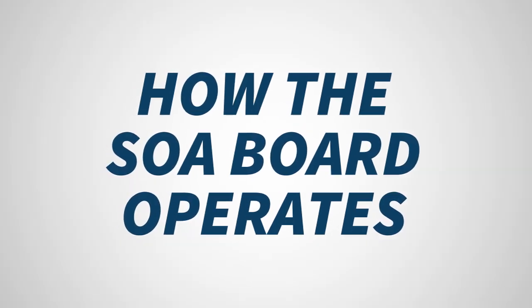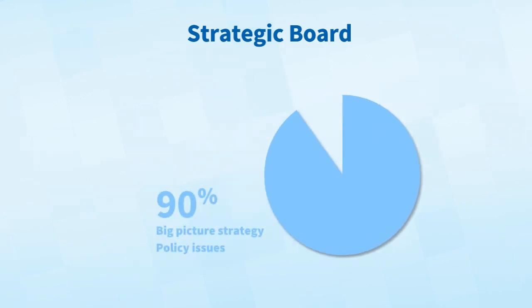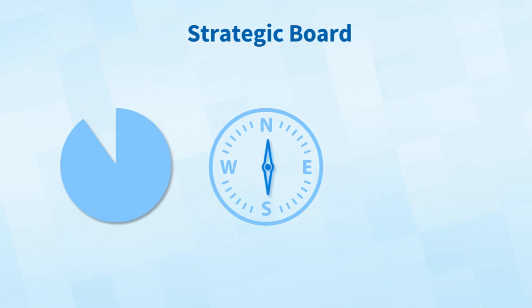Now let me introduce Dave Dillon, a past SOA board member, who will walk you through a bit more detail on the role of the SOA board of directors. A question that gets asked a lot is exactly how does the SOA board operate? Well, the short of it is it's a strategic board — it is not an operational board. The board spends about 90% of its time on big picture strategy and policy issues, not day-to-day stuff. This approach reinforces the board's leadership role in setting the direction for the actuarial profession and the SOA.